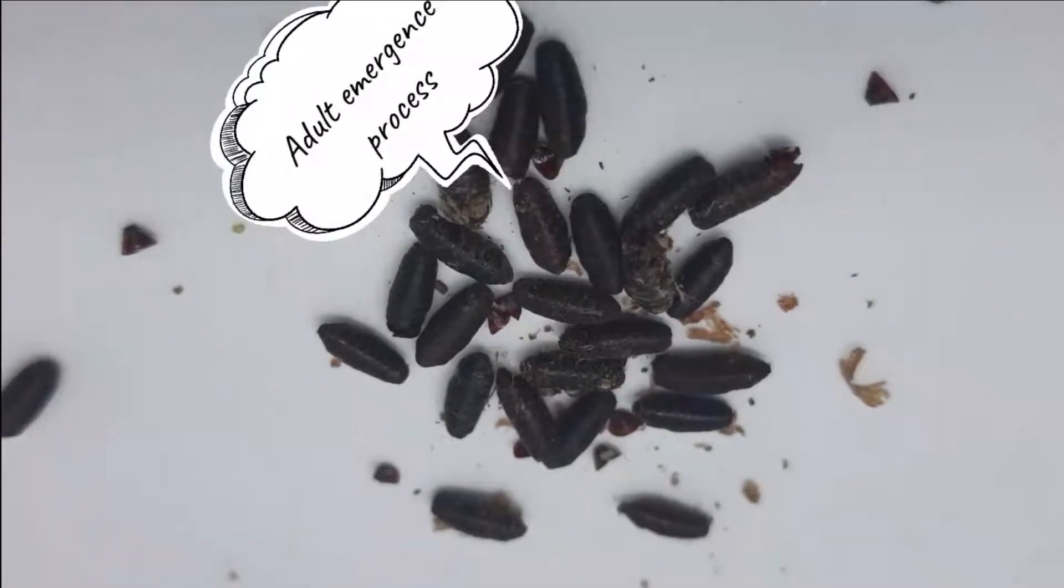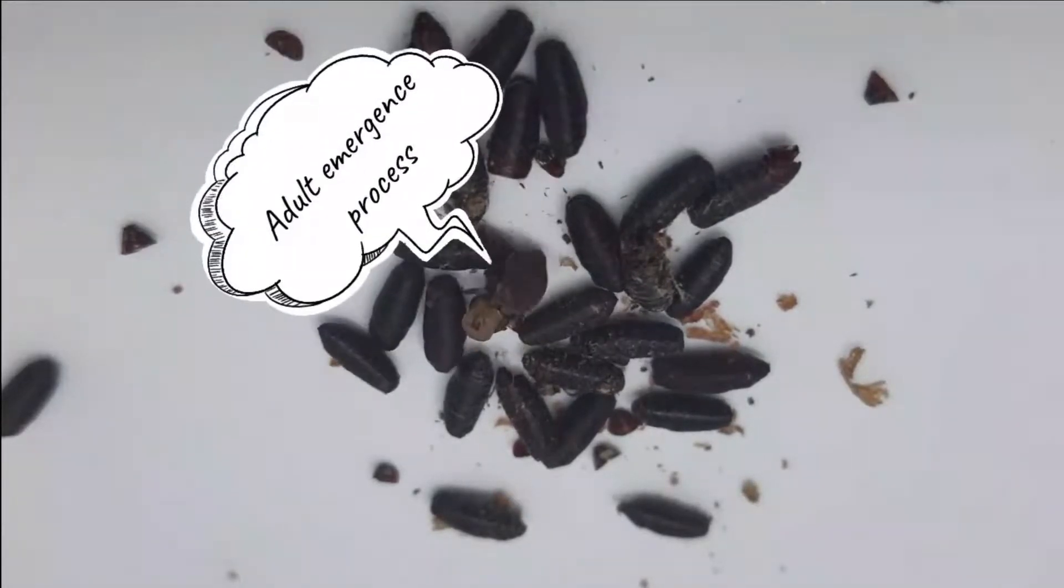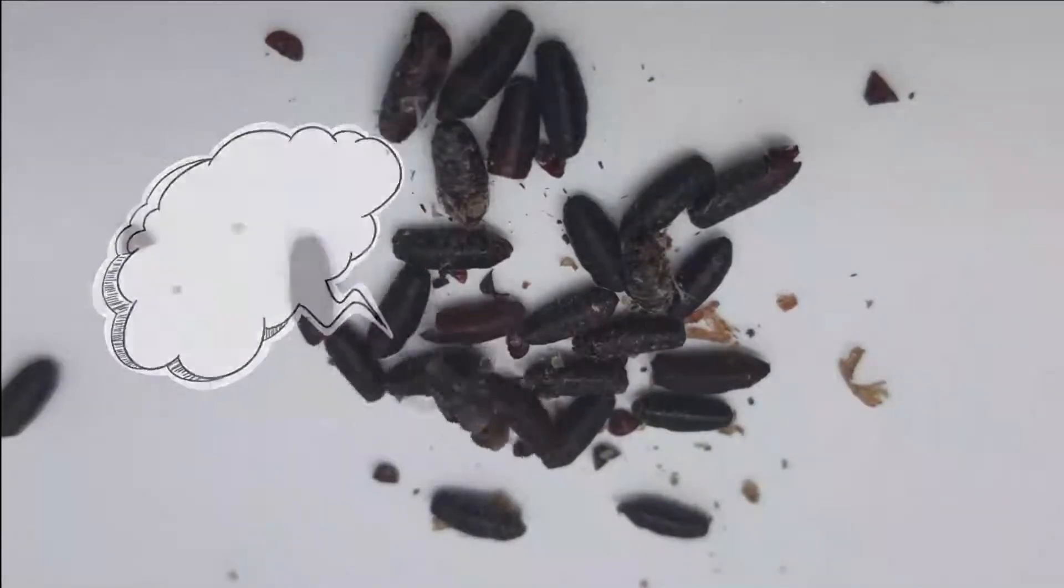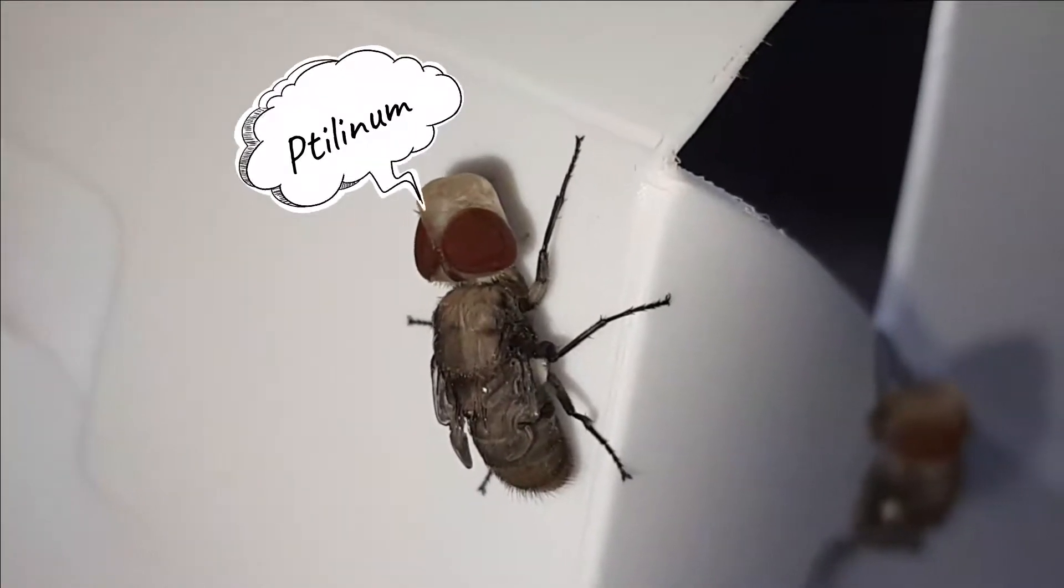Moving on, the flies will be emerged as an adult. Immediately after the adult emergence, the fly is known as a teneral adult where they have less pigmentation and no fully developed wings can be seen. The ptilinum is still swollen and will shrink with time.